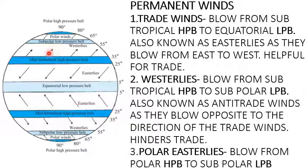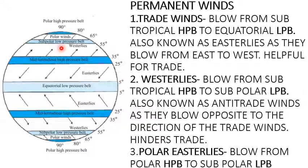Then westerlies — they blow from the western direction to the eastern direction, from the subtropical high pressure belt to the subpolar low pressure belt. As they blow opposite to the direction of trade winds, they are known as anti-trade winds and they hinder trade also.